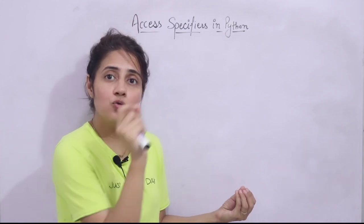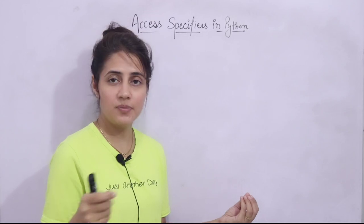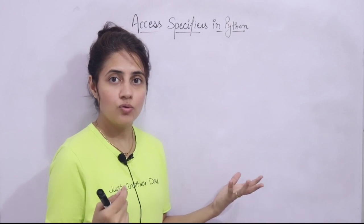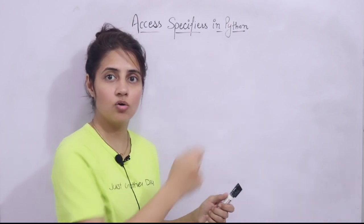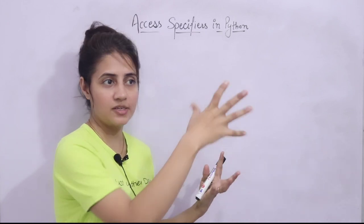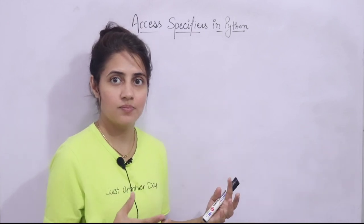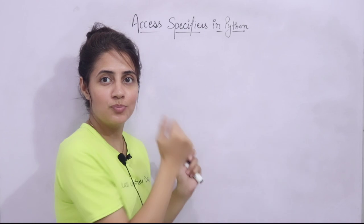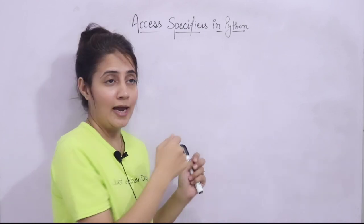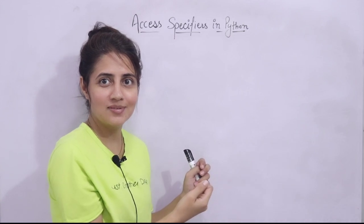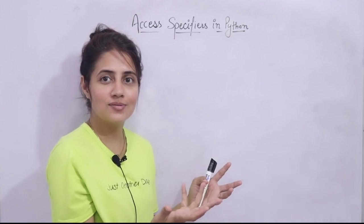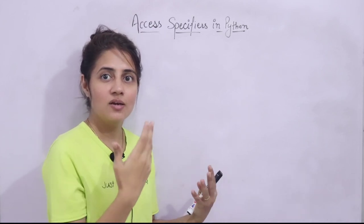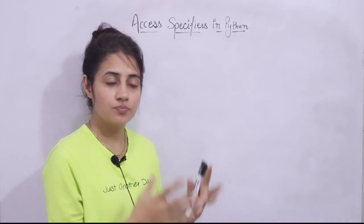But actually, how are we going to hide those things? In real life, if something is very precious to you — like some money, jewelry, or anything — we generally put that thing in a locker. We have a lock, a key, or a digital lock. But in programming, it's not like we have an actual lock and key. So how are you going to implement that security? Because abstraction, encapsulation — these things are related to data hiding, information hiding, and security.